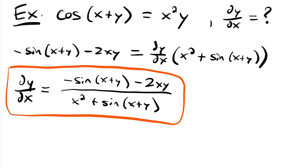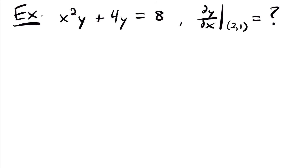For our final example on implicit differentiation, we have x squared times y plus 4y equals 8. But now instead of just finding the derivative, we are interested in finding the value of the derivative at a particular point — in this case (2, 1). So let's find dy/dx first, then plug in the point.